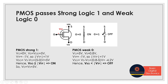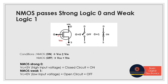Whenever we apply a high input voltage and have a very low source input voltage, PMOS passes weak logic 0. Logic 0 means very low — VS was already at logic 0, and it was not able to pass that value to the drain output terminal because an open circuit was formed. That's why it is said that PMOS passes weak logic 0.